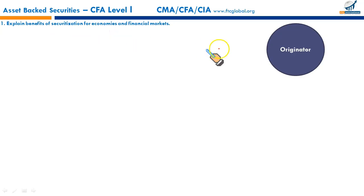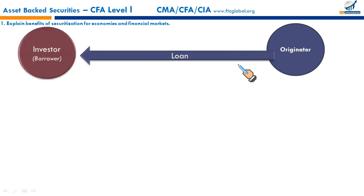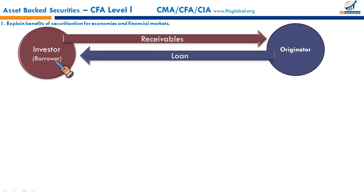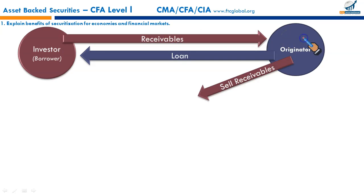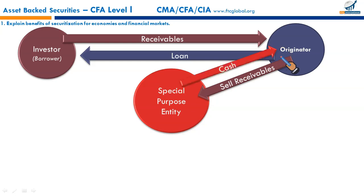Let's take an example. A financial institution — a bank — has granted a loan, maybe an auto loan or mortgage, to a borrower. That borrower's obligation becomes a receivable for the originator. The originator can then sell these auto loans or mortgages to a special purpose entity, a legal entity specifically created to buy these assets.